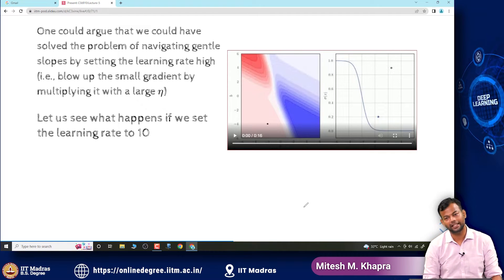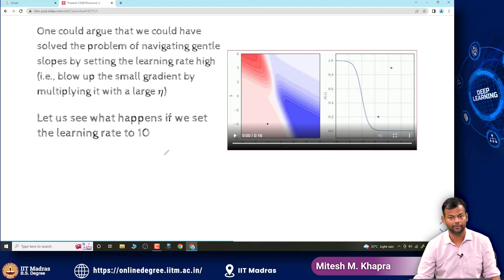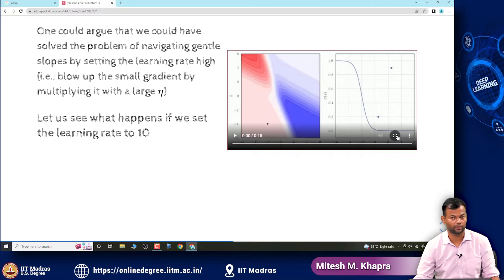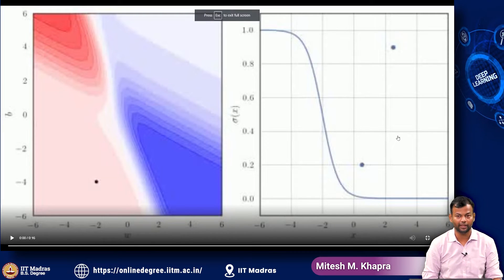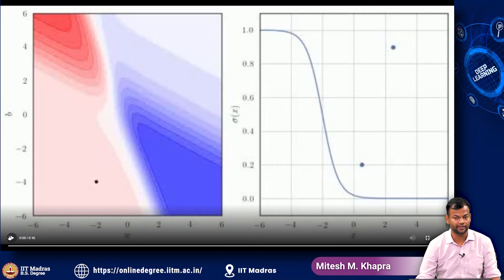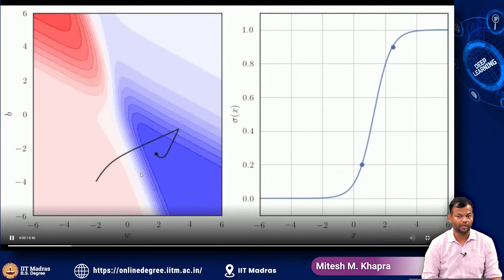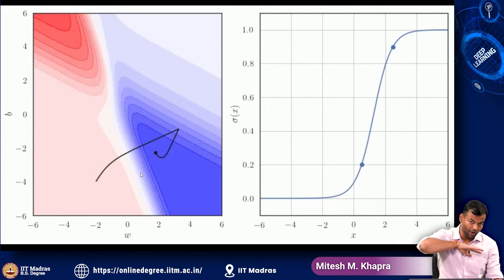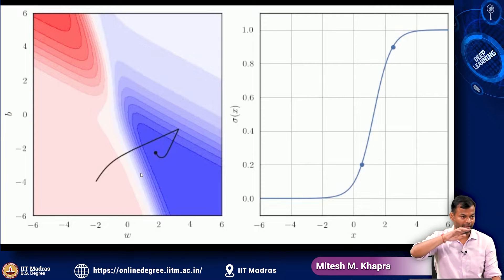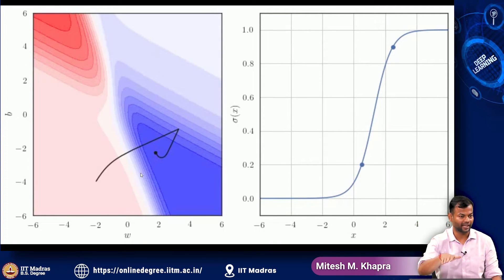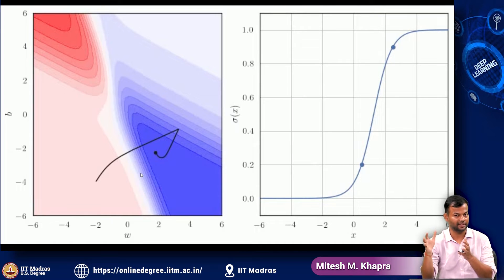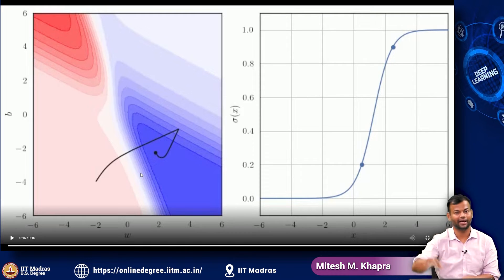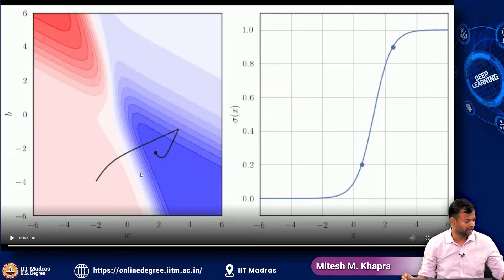So maybe increasing the learning rate would help. Let us see what happens if we set the learning rate to 10 instead of 1. It is moving fast, but then you see the problem of oscillation. You want it to be fast on the gentle flat places, but you do not want it to be fast once it enters the valley. On steep surfaces the gradient is already large, and multiplying by a large learning rate causes oscillation. So simply increasing the learning rate is not always the solution.